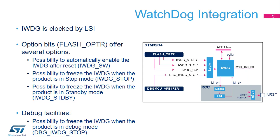When the IWDG is enabled, the LSI oscillator is enabled automatically. The option bits allow adjustment of the IWDG behavior according to the application needs: the possibility to automatically enable or not the IWDG after a reset via the IWDG SW-bit — this is often called the hardware or software activation mode; the possibility to freeze the IWDG when the product is in stop mode via the IWDG stop bit; and the possibility to freeze the IWDG when the product is in standby mode via the IWDG STBY-bit. It is possible to select if the watchdog will freeze or not when the product is in debug mode, core halted.